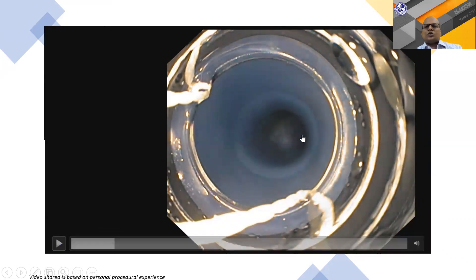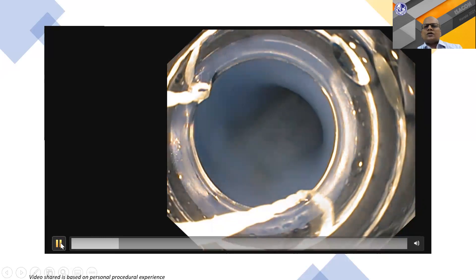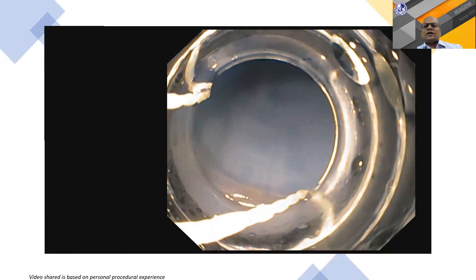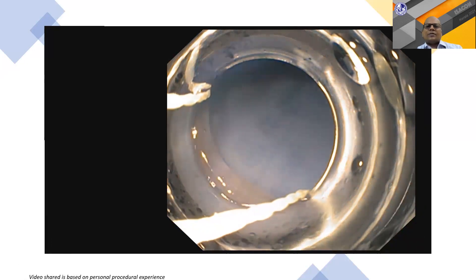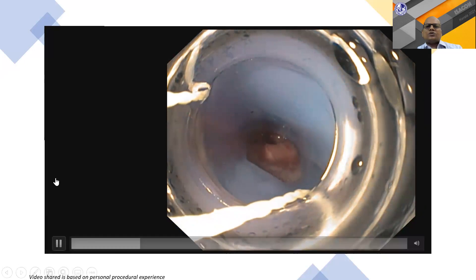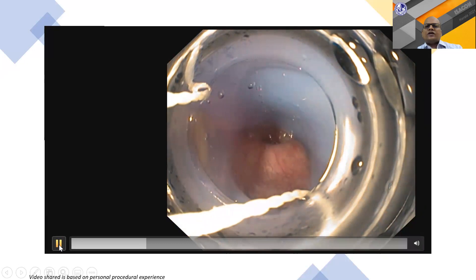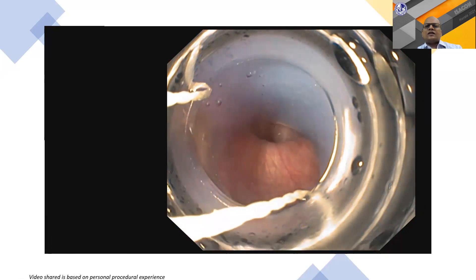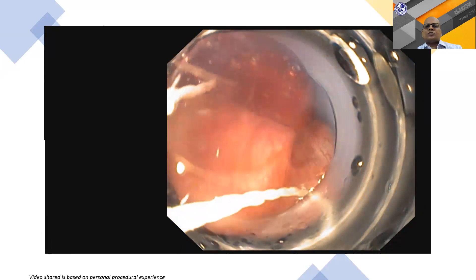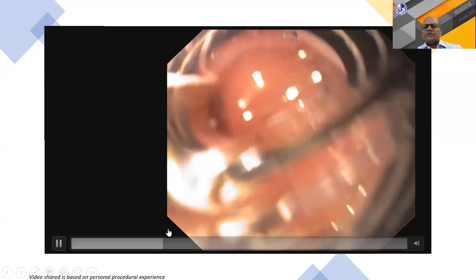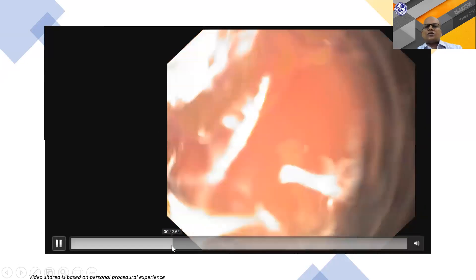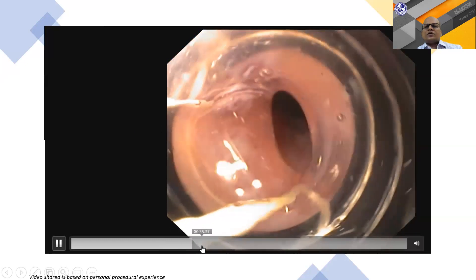The gastroscope with a band around it has a diameter of 13 mm, which can cause some resistance. A very effective solution is transient deflation of the cuff—deflating allows the scope to pass much more comfortably. This transient cuff deflation is a good practical option when resistance is encountered.